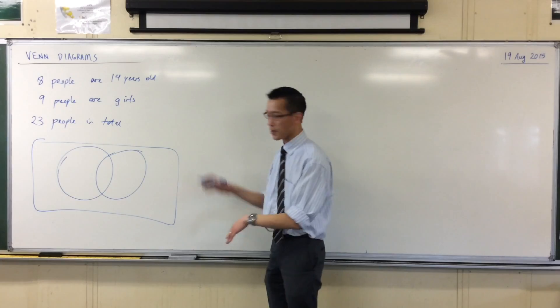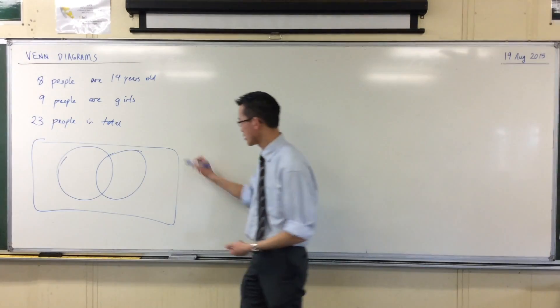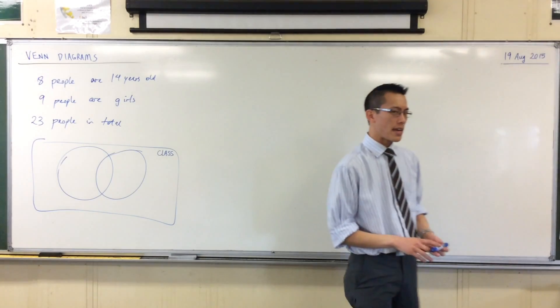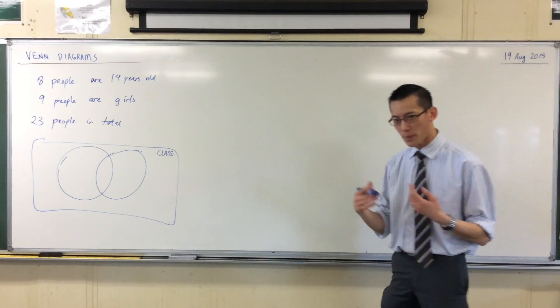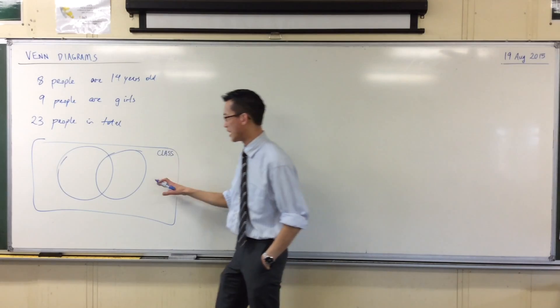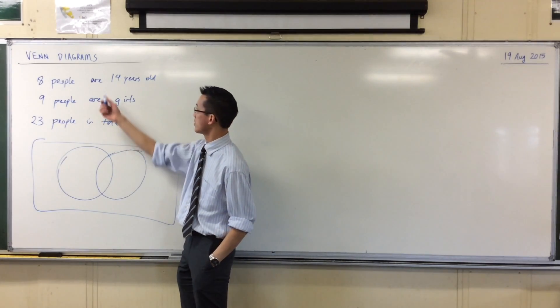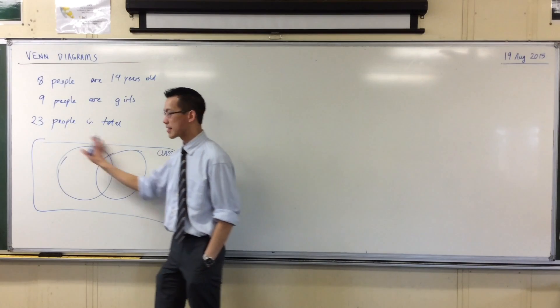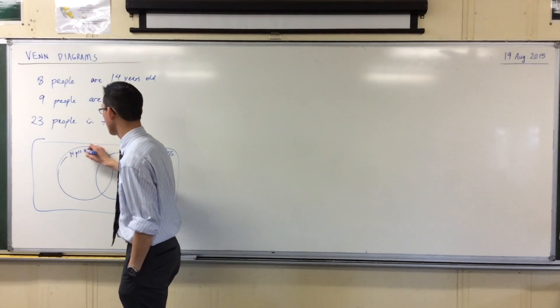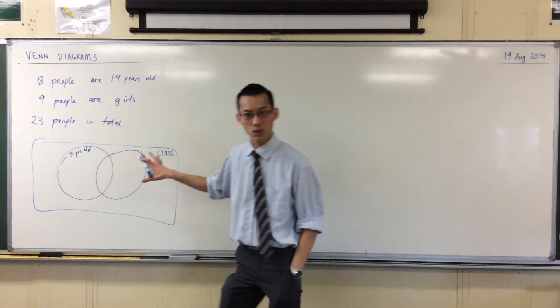All right, now to illustrate the way the Venn diagram works. This big box is everyone in the class, so let's just label it class. Inside this space I'm just going to put numbers that correspond to how many people belong in each of these different spots. For instance, 14 years old, I'll make that our left-hand circle.